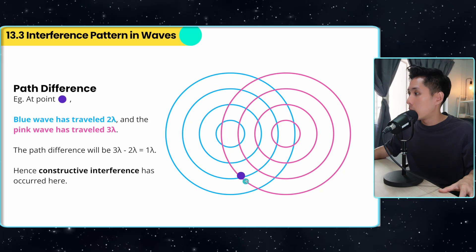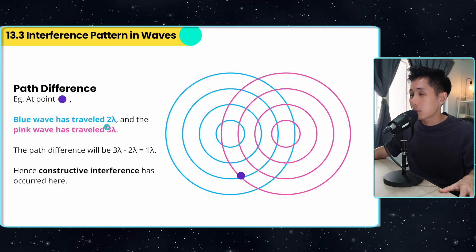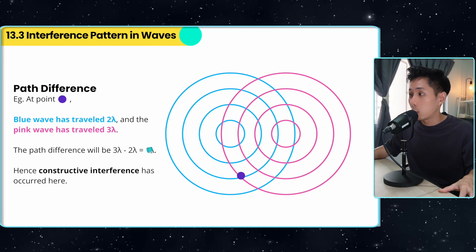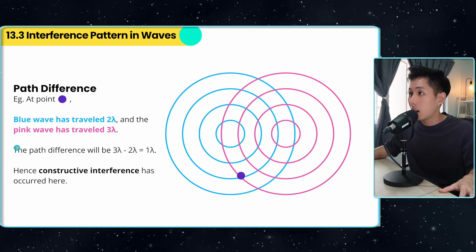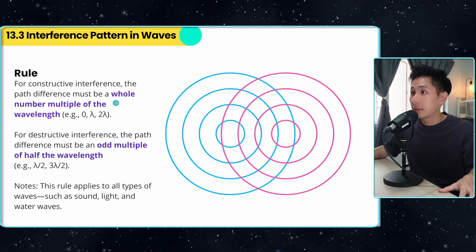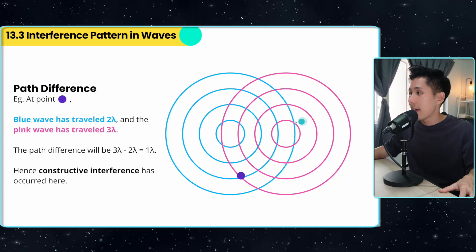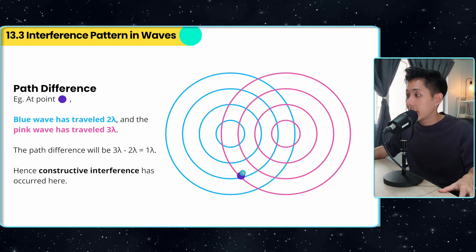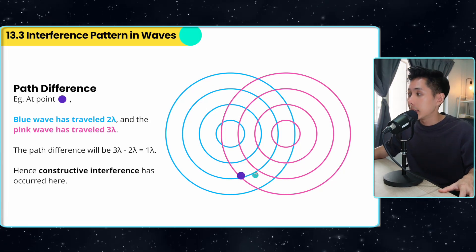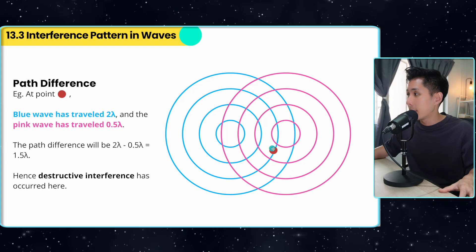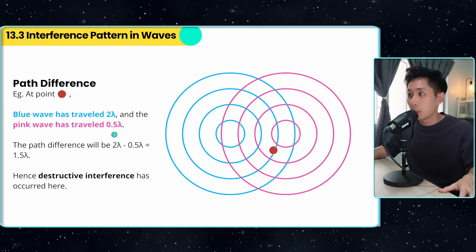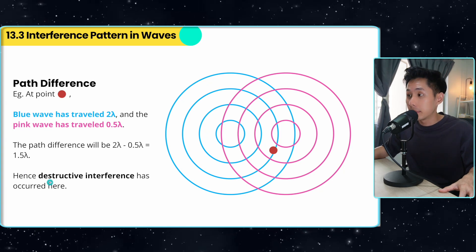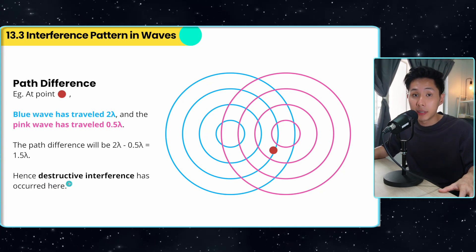Let's solve some questions. For the purple dot, the blue wave has traveled two lambda and the pink wave has traveled three lambda. The path difference is one lambda. Because the path difference is a whole number, constructive interference is happening at the purple dot. Whereas for the red dot, the path difference is 1.5 lambda, and because of that, destructive interference has occurred.